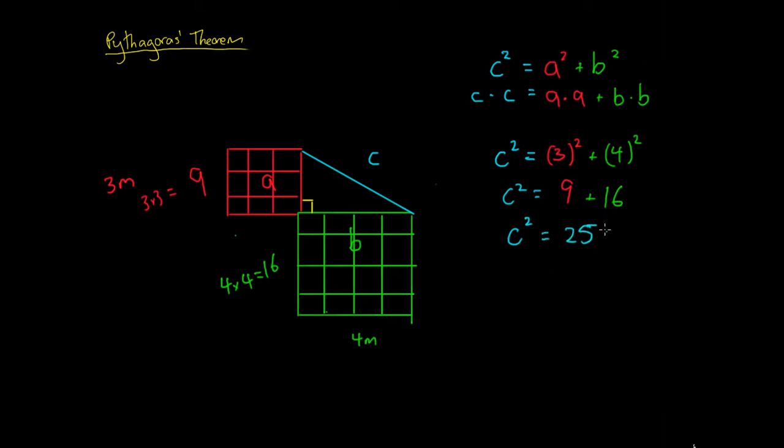So C is equal to the square root of 25, and we know that the square root of 25 is equal to 5. So this side length here of C should be 5 meters.